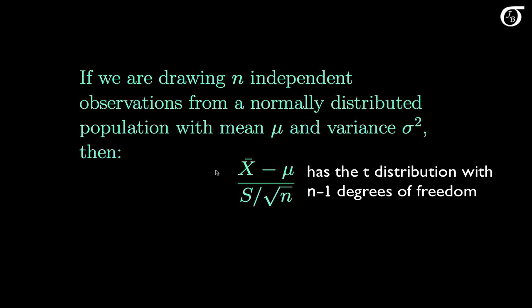Here the sample mean x̄ is a random variable representing the mean of the n observations, and the sample standard deviation s is a random variable representing the standard deviation of the n observations.